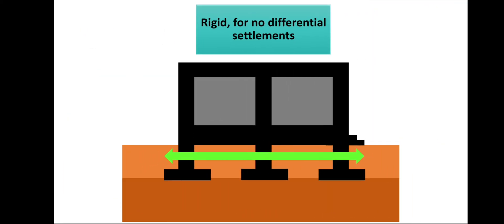The foundation should be rigid — no elastic movement should occur. If the footing is elastic or plastic, it will deform under loading of the superstructure, and such unevenly deformed footing will cause serious problems through non-uniform or differential settlements. Therefore, the substructure or footing must be rigid — neither elastic nor plastic.